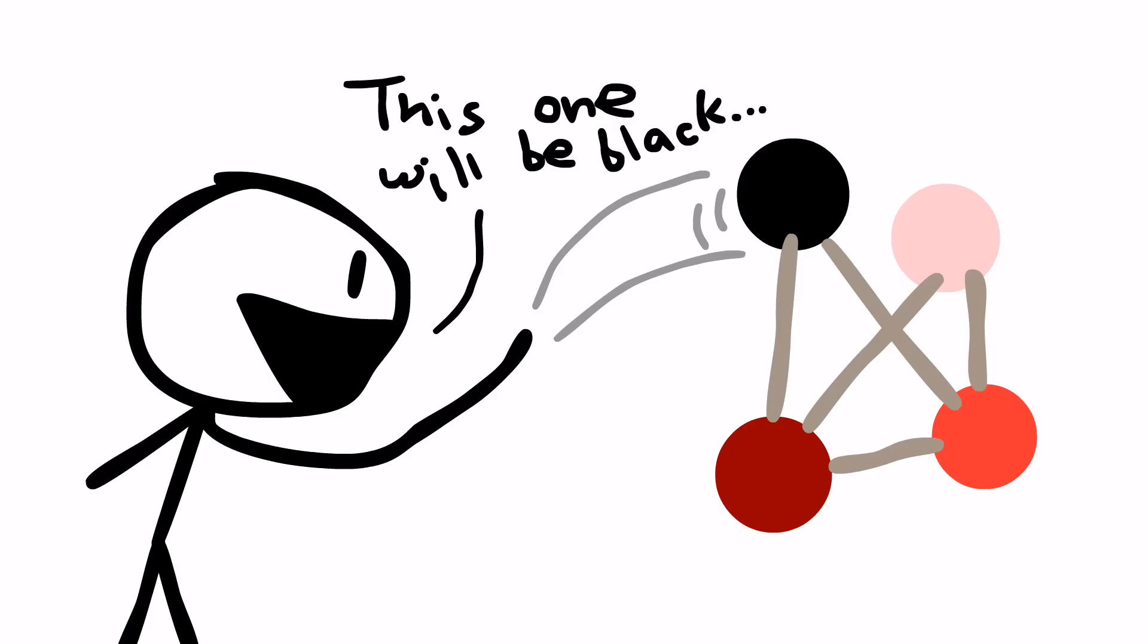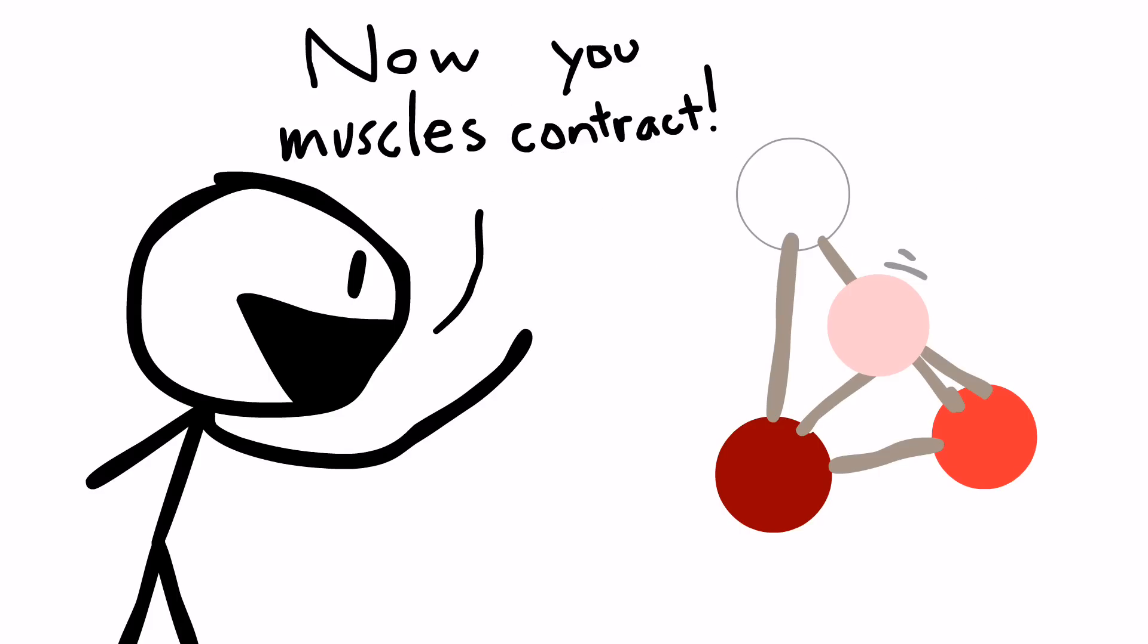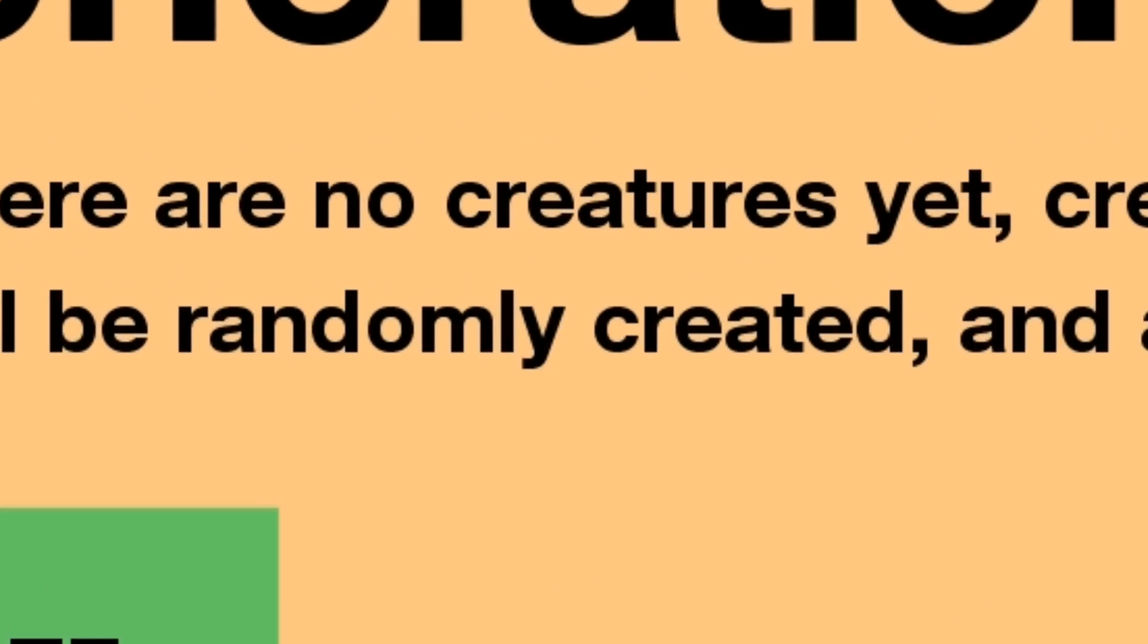Okay, so who gets to determine all these traits, like how friction-y nodes are, or what muscle's contract times are? Well, at the beginning, it's just random chance. They're randomly generated.